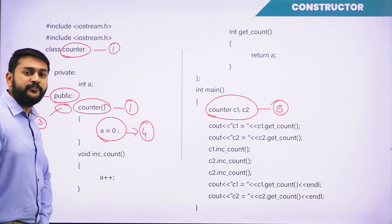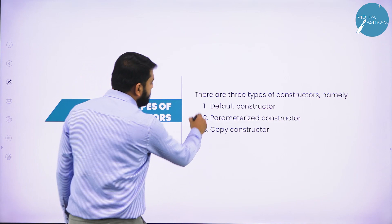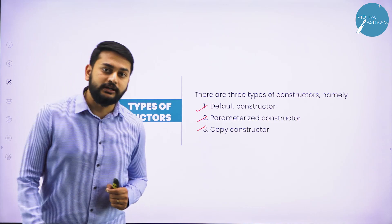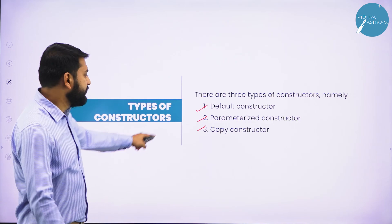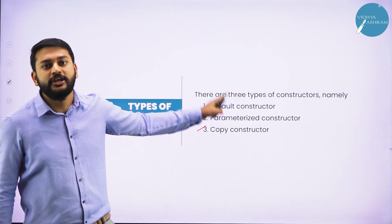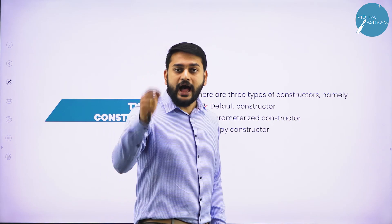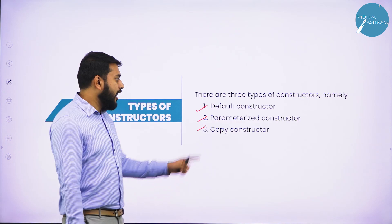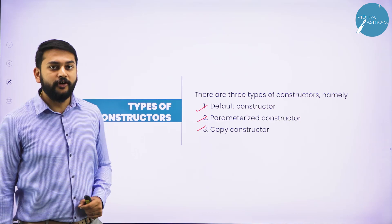Let us understand how many different types of constructors we have. We have 3 types: the first is default constructor, the second is parameterized constructor, and the last is copy constructor. I have already discussed the default constructor. You will understand it fully if you watch the next session completely. Till then, take care. Bye-bye.